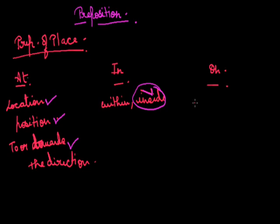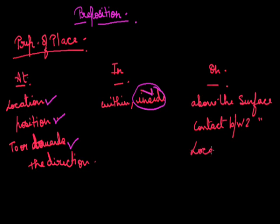The preposition 'on' indicates upon or above the surface of something, contact between two surfaces, or location at or along a place. For example, 'The vase is on the table' means the vase is on the surface of the table. 'I noticed mud on her trousers' indicates contact between two surfaces — the trousers and the mud. 'The house on the beach is surrounded by palm trees' uses 'on' for location along a place.